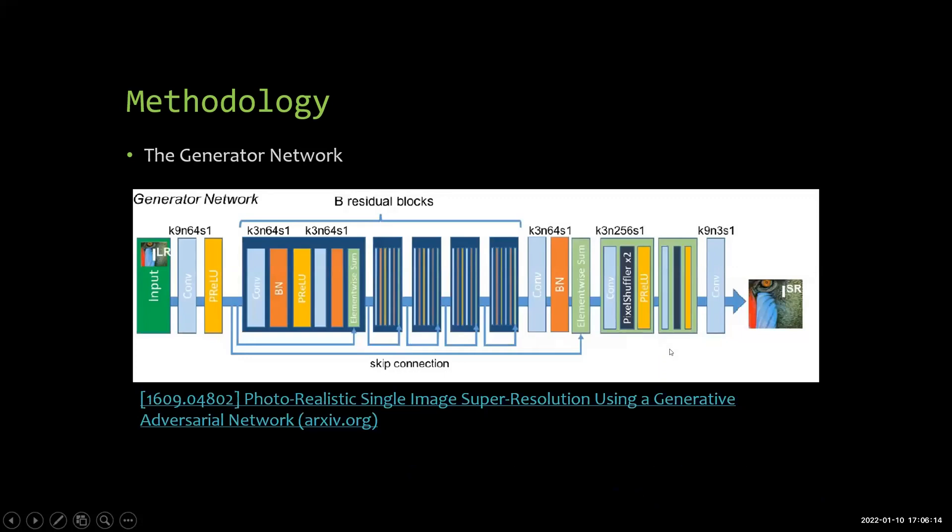The architecture of the generator network, as shown here, contains B residual blocks, which in my case B is 16. So we have 16 residual blocks.